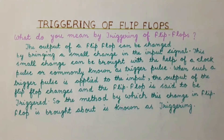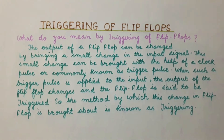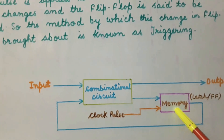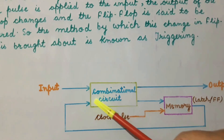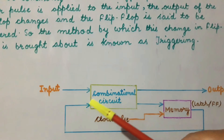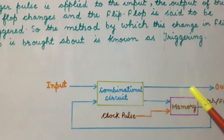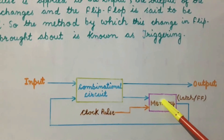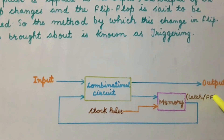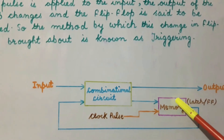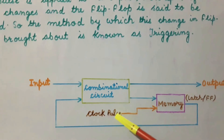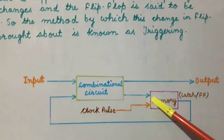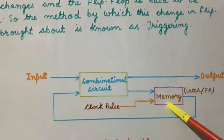Now the question arises: which part of the sequential circuit do we have to trigger? A sequential circuit is nothing but a combinational circuit with a memory. If we have a combinational circuit and an input is given to it, then the output will be generated. The state of this combinational circuit is stored in the memory, and this memory is nothing but our latch or flip-flop. So which part of the sequential circuit do we have to trigger? We have to trigger this memory element.